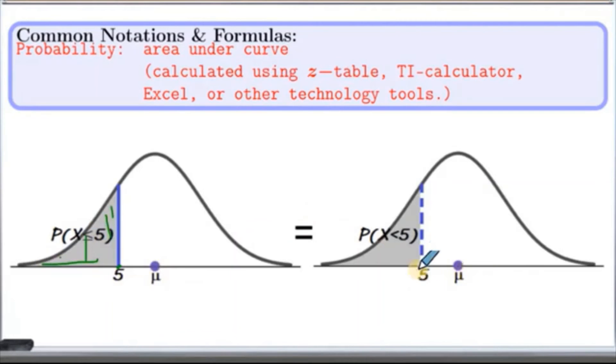Again, if 5 is here, let's say right here, then the probability of x is given by the shaded area here, by this area.